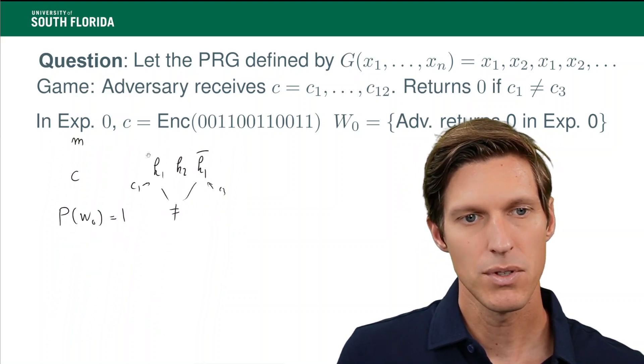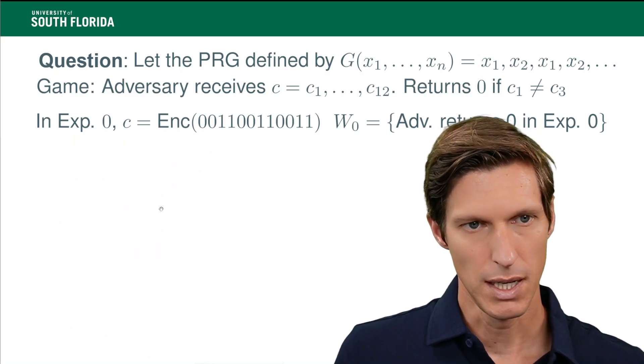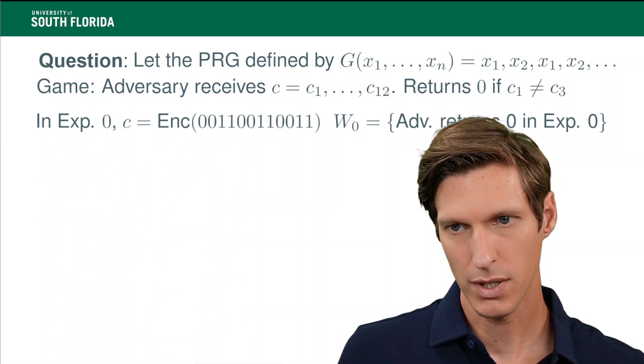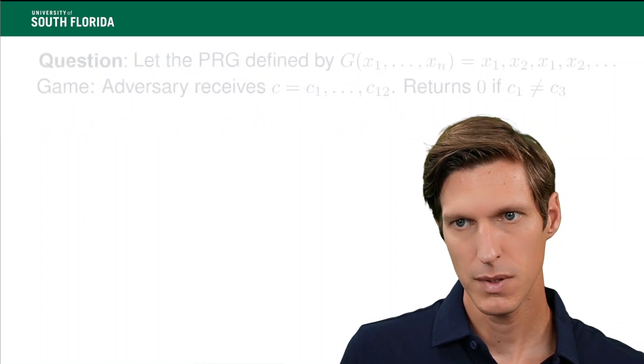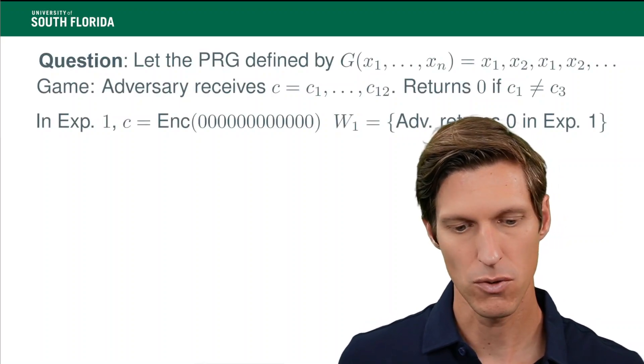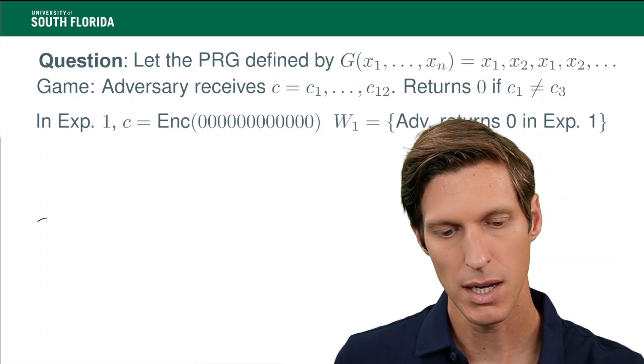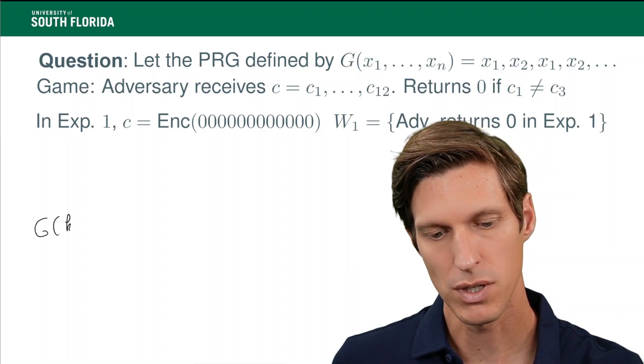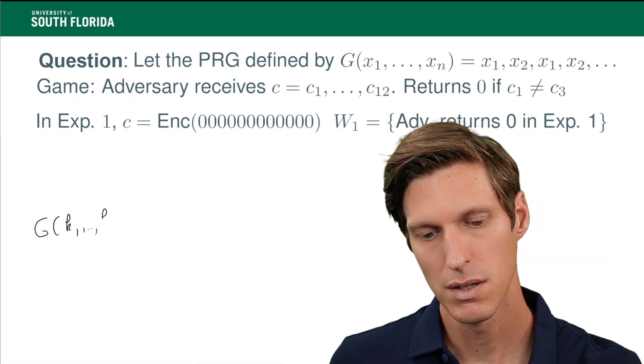Now let's see what happened to that same adversary in experiment 1. Experiment 1, we're receiving the encryption of the all-zero message. So I just rewrite my keystream to simplify things here.